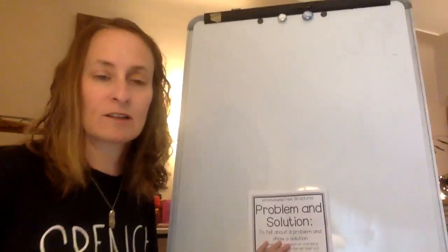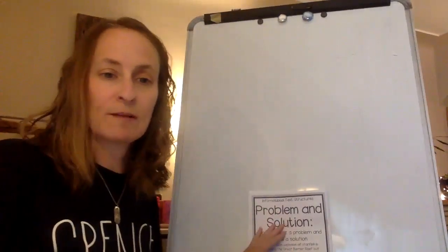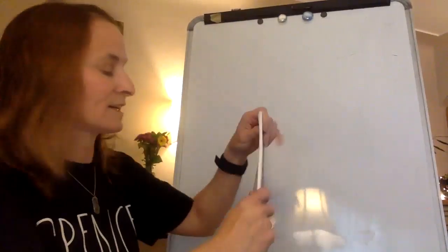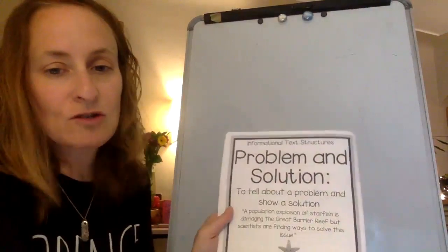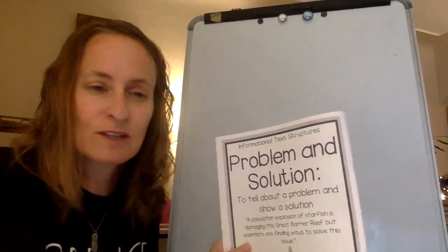Alright, here is our final daily reading lesson for the week, for Friday May 22nd. We're going to investigate this last informational text structure, which is problem and solution.